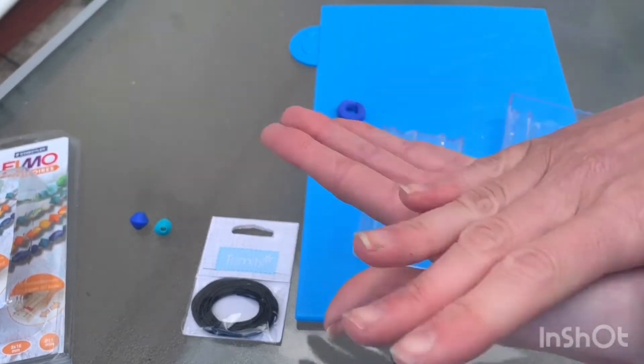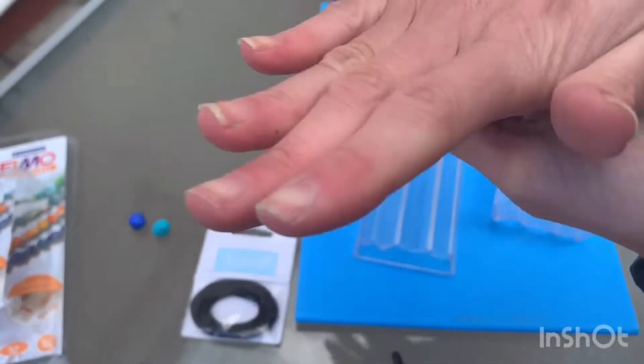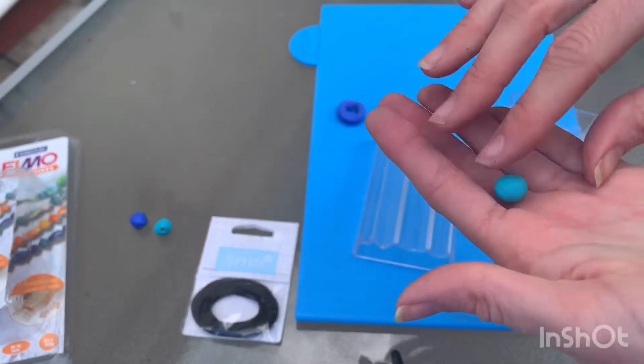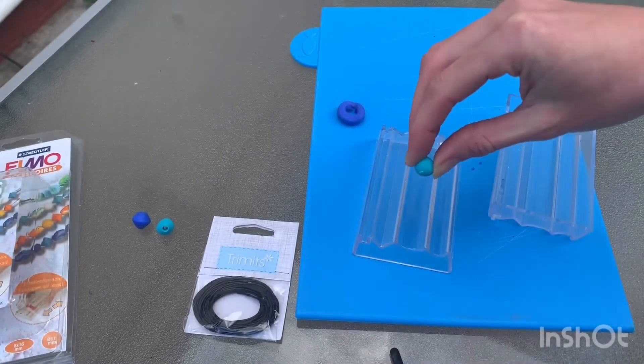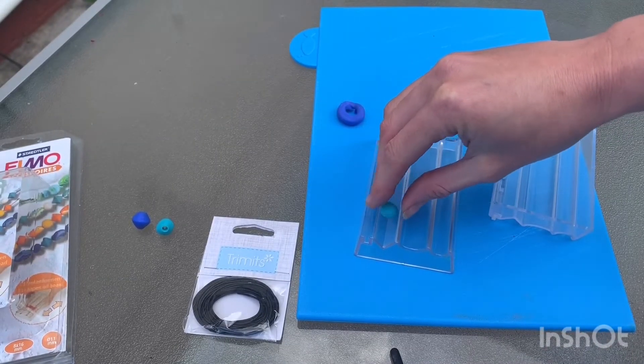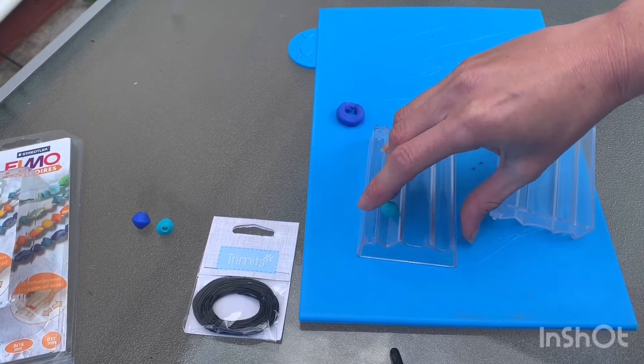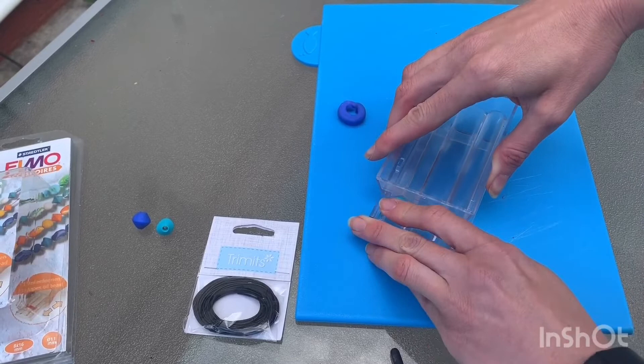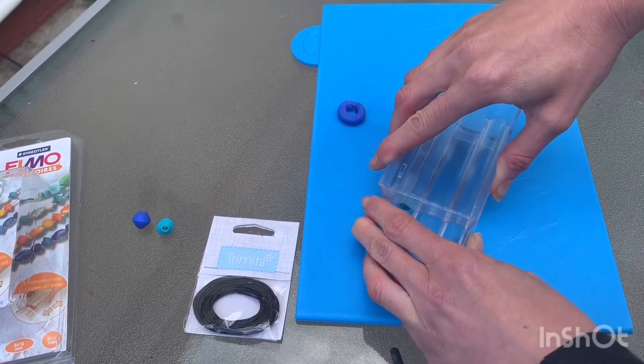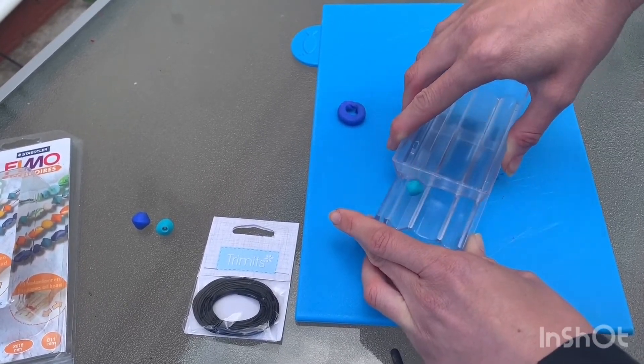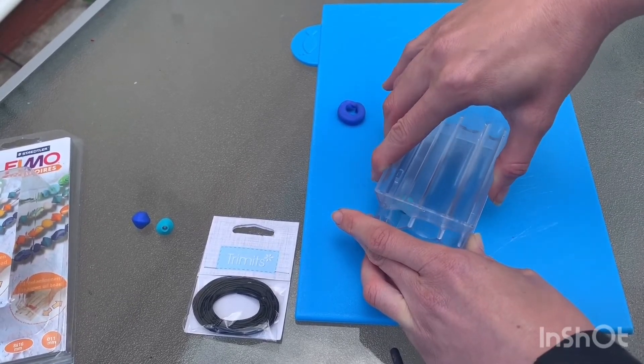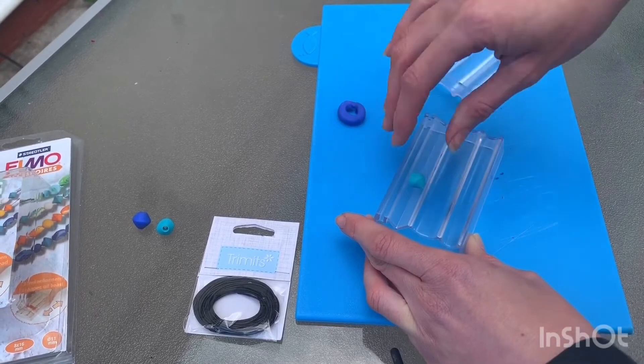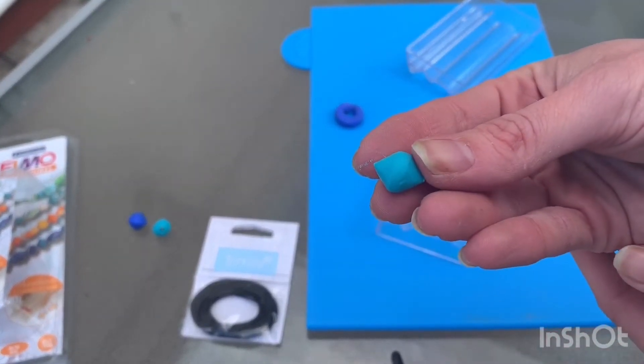This then needs to go into a ball, and then you pop this into the desired shape, so I'm going to go for this diamond pattern. Pop the lid on and then roll top and bottom a few times until you see your bead taking shape. And there is the bead.